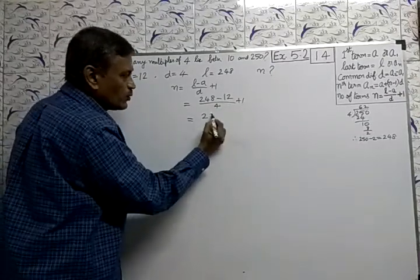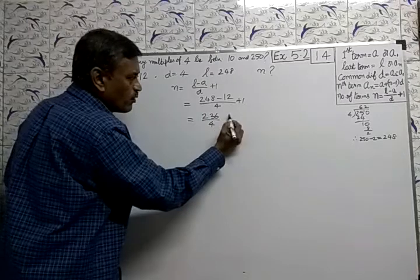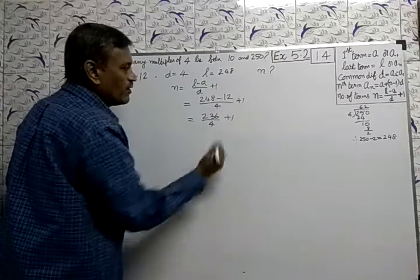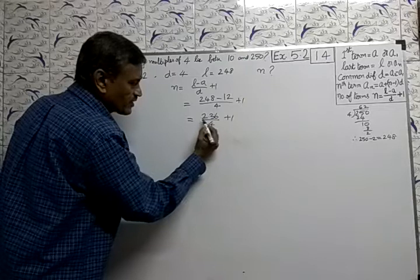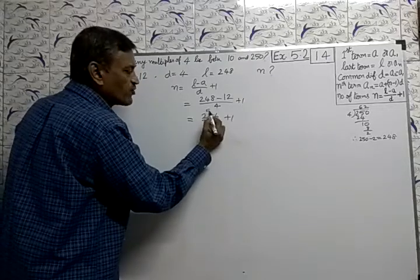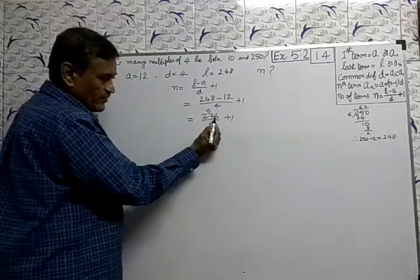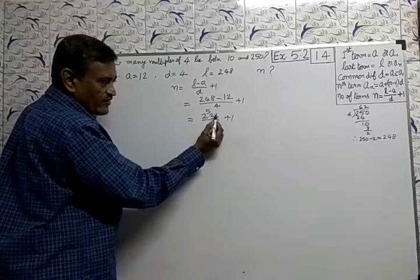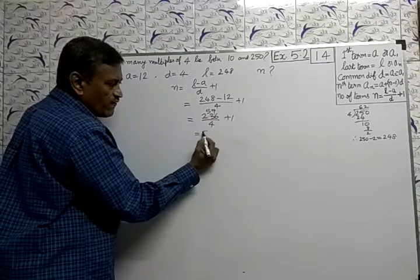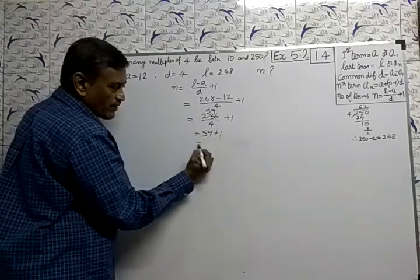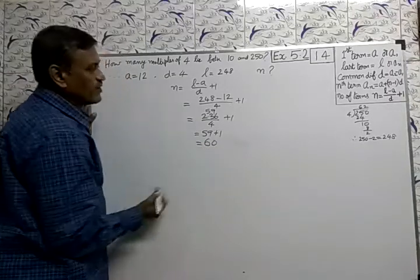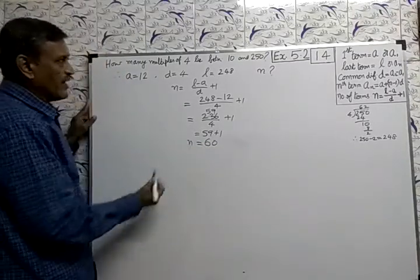248 minus 12 equals 236. 236 divided by 4... 4 goes into 23 five times, remaining 3. 36 divided by 4 is 9. So 59 plus 1 equals 60. N equals 60. Therefore...